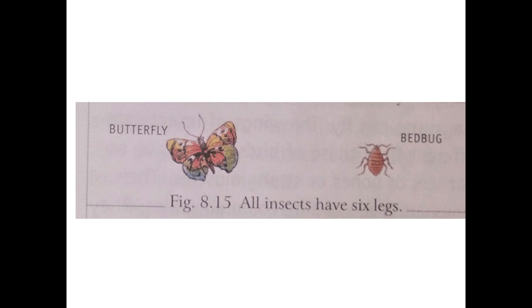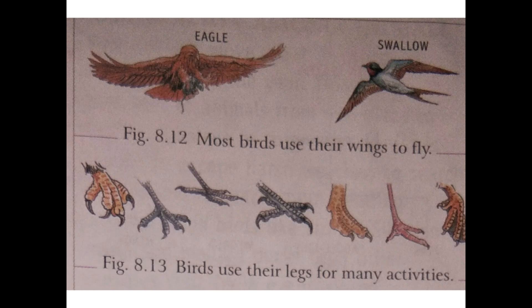Unlike birds, insect wings are not made of feathers and insects do not have bones or strong muscles. Their wings are made of tiny colored scales attached to their chest muscles, and with these they fly. Birds fly with the help of their wings, which have feathers. Birds have hollow bones and wings attached to chest muscles. When settling on the ground, birds walk using their one pair of legs.